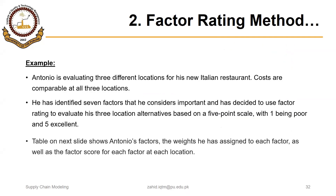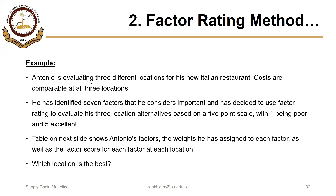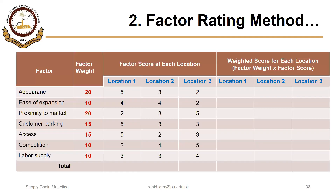Let's take a simple example. Antonio is evaluating three different locations for his new Italian restaurant. Costs are comparable at all three locations. He has identified seven factors that he considers important and has decided to use the Factor Rating Method to evaluate his three location alternatives based on a five-point scale, with one being poor and five excellent. The table on the next slide shows Antonio's factors, the weights he assigned to each, and the factor scores for each location.